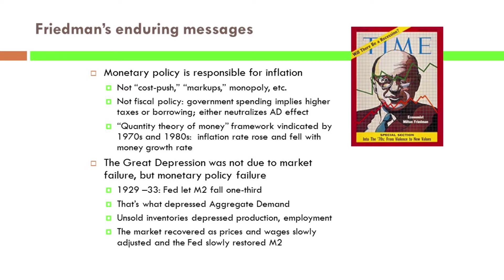Coming back to the Great Depression: Friedman, and Friedman and Schwartz in their Monetary History of the U.S. published in 1963, made the point that what prolonged the Great Depression and made it so deep was a big collapse in the money supply between 1930 and 1933. There were a series of banking panics — people running on banks, putting money in their mattresses — and the money supply collapsed. The Fed wasn't doing anything to offset that and wasn't acting as it should as a lender of last resort. Friedman regards this not as a market failure, but as a monetary policy failure.